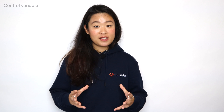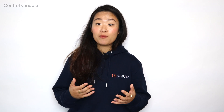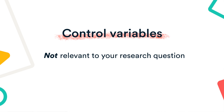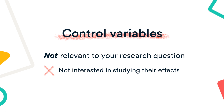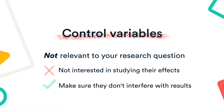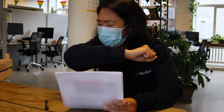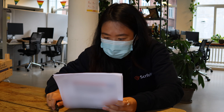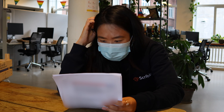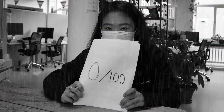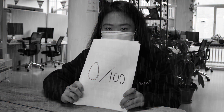A control variable is a variable that is held constant to prevent it from influencing the outcome of a study. These are variables that aren't relevant to your research question — you just want to make sure they don't interfere with your results. For example, it's likely that if a student feels ill, they will get a lower score on the exam. Therefore, we'll add health as a control variable.